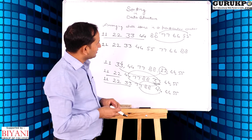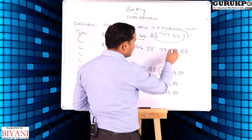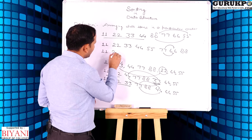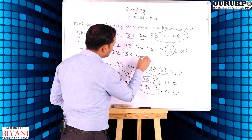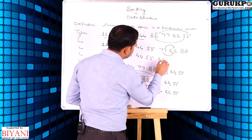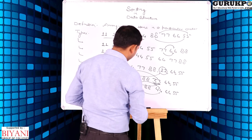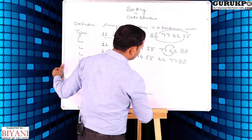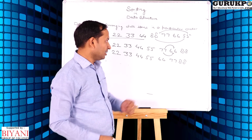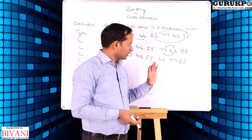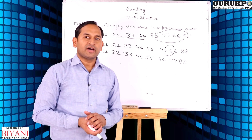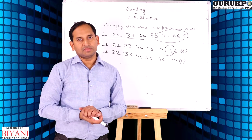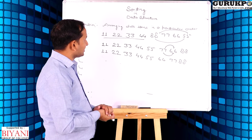Now the starting 5 elements are already sorted. Again we apply selection sort and find out the smallest element, that is 66, and insert 66 in the appropriate place. Next smallest element is 77, which is already sorted, and the last one is 88, which is also already sorted. By using selection sort we can easily arrange data items in sorted form. This is a very simple technique.